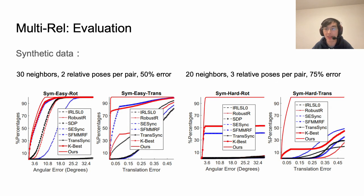We evaluate our method on three types of datasets. The first is the synthetic dataset with 1000 vertices. This dataset includes two settings. The first setting is that we connect each vertex with 30 neighbors, and for each connection there are two relative poses with half of them being accurate. For the next setting we pick 20 neighbors and between each pair are three possible relative poses with 25% being accurate. In both settings our method significantly outperforms the state-of-the-art methods.